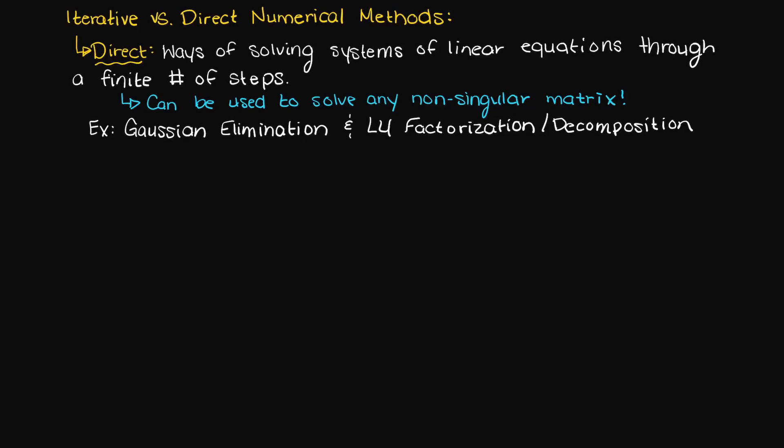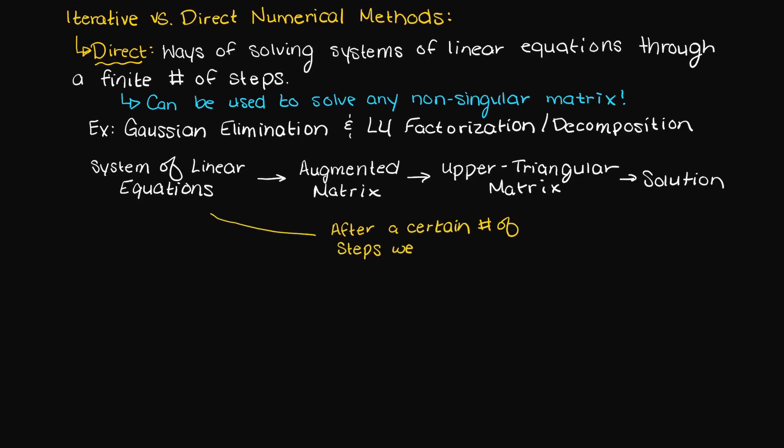When solving systems of linear equations using these direct methods, we take a set number of steps, such as convert our system of linear equations to an augmented matrix, then turn to an upper triangular matrix, then solve. After a set number of steps, we arrive at a final solution.